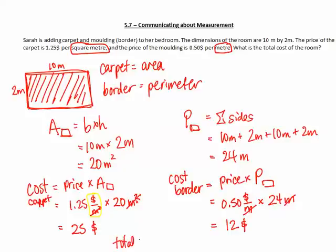So then the total cost of both the carpet and the border is $25 plus $12 equals very inexpensive renovation for this room. It only costs $37 to renovate this room. It's a great price.